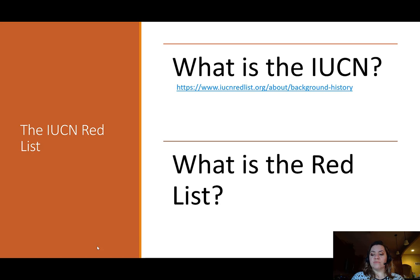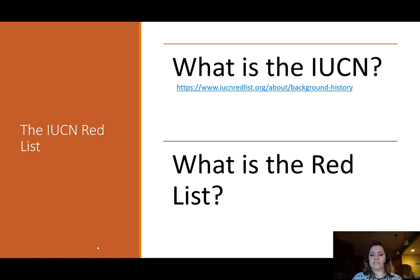There is a video I would like for you to watch. The link is provided, and I will also post it on our Moodle page. It gives you an idea of what the IUCN has been trying to do since its inception. The IUCN has been around since the 1940s, but the Red List itself has only been around since the 1960s. The Red List is a published list of species that is updated continually.